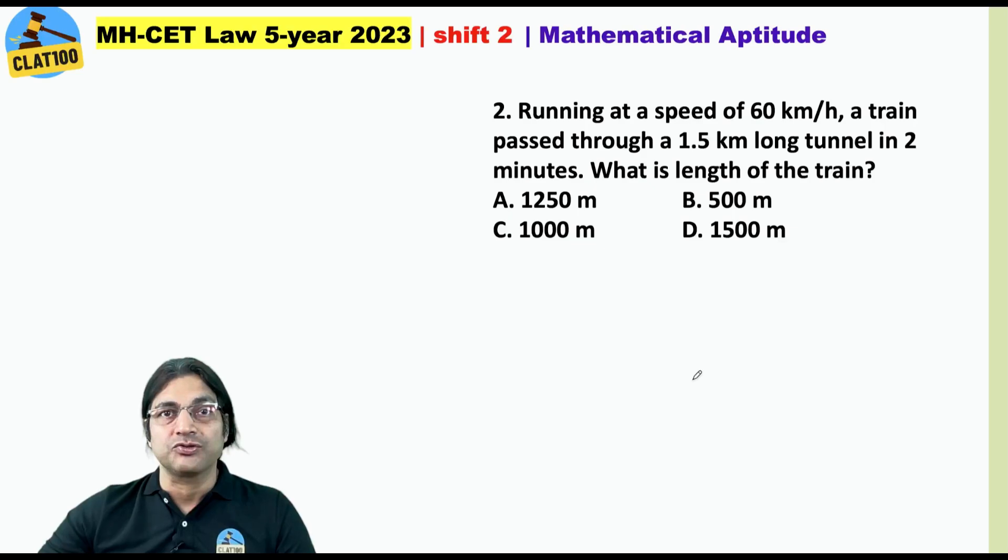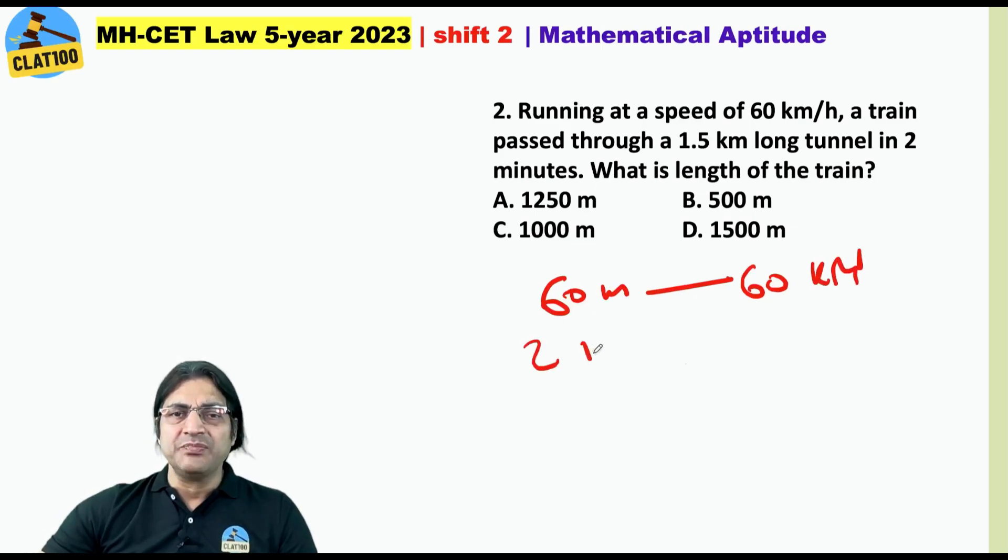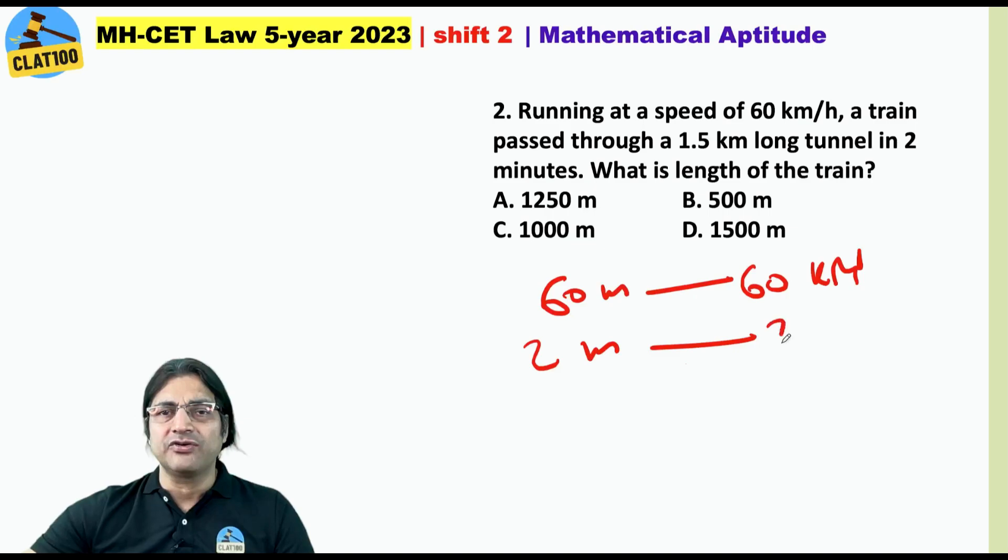Running at a speed of 60 kilometer per hour, a train passed through a one and a half kilometer long tunnel in two minutes. What is the length of the train? First of all, the speed of the train is 60 kilometer per hour, so in 60 minutes it does 60 kilometers. In two minutes it will do two kilometers.